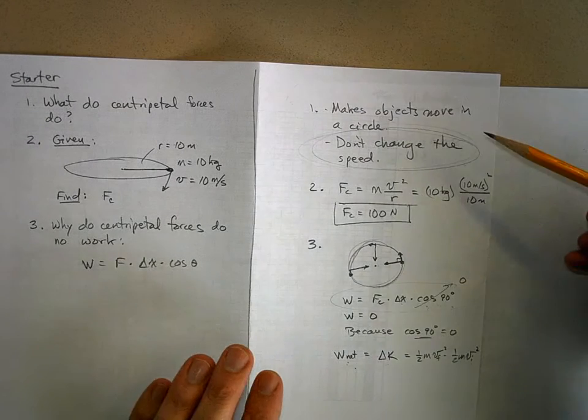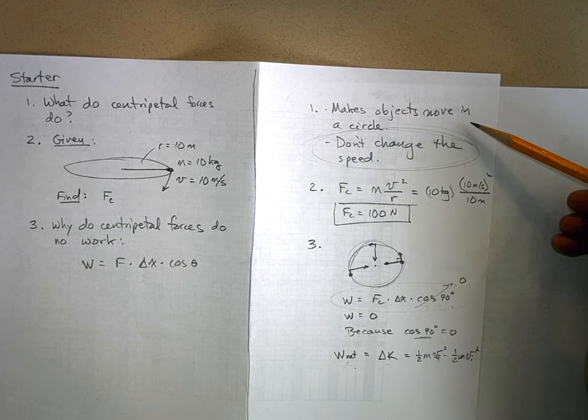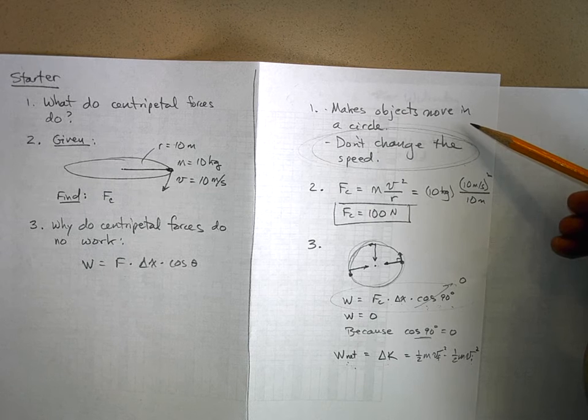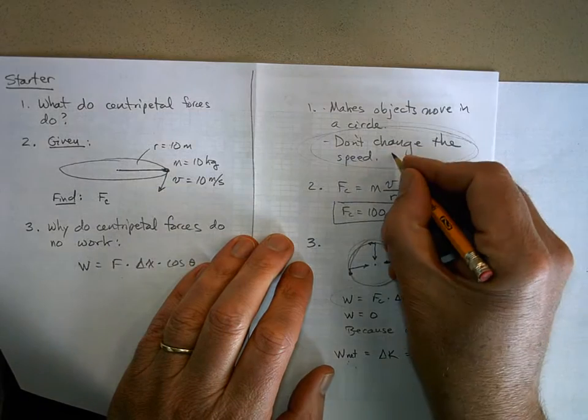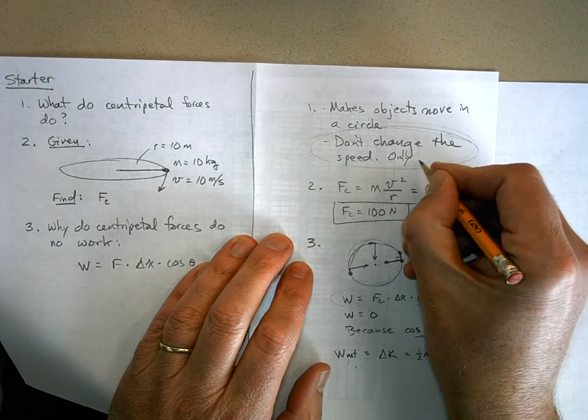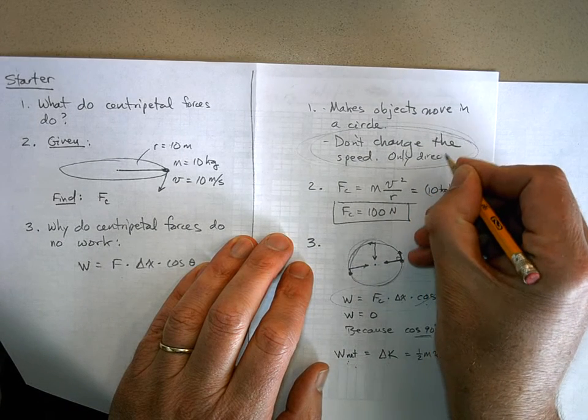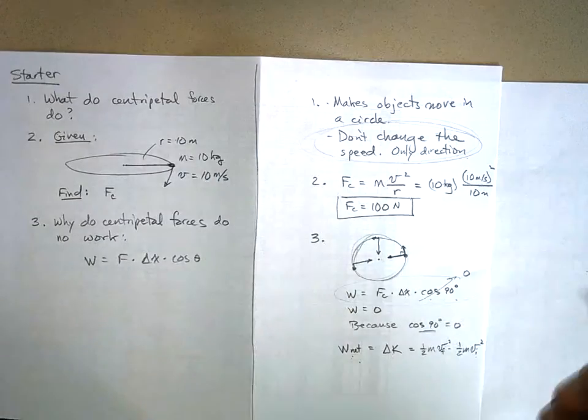Centripetal forces make objects move in circles. If it's a constant centripetal force, they also don't change the speed. They only change the direction. They change the direction of the object but not the speed.